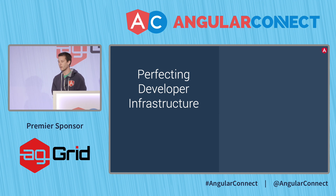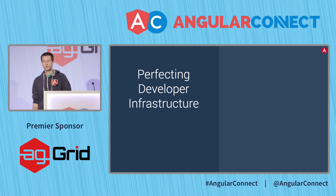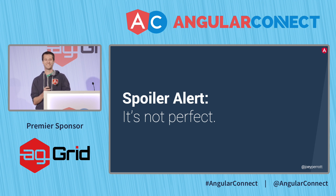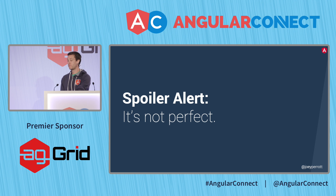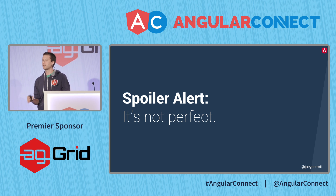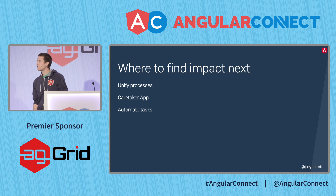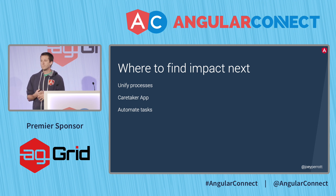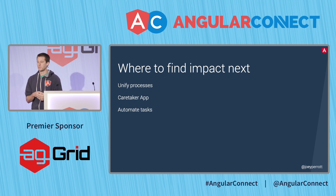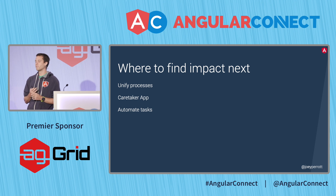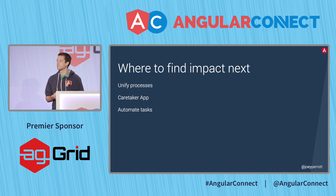That brings us to the last thing I want to talk about: perfecting developer infrastructure. It's not perfect — but we have very well shown that by dedicating time to making sure our processes and tools get better, we are making things better for the people making Angular. We often talk about how the angular/angular repository works, but we actually manage a lot of different repos within the Angular org. If we can unify the processes that happen across those repos, we can be even more efficient and reduce the overhead it takes to manage all of them.